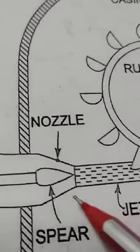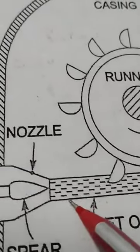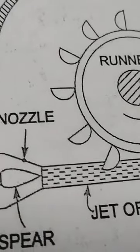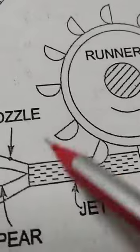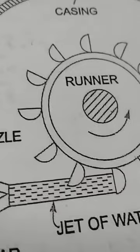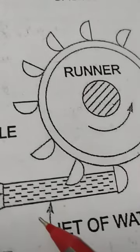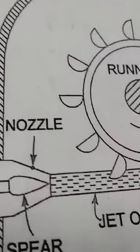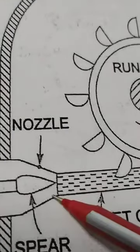Coming to overall efficiency, I take from first to last: the first power is water power and the last is shaft power. The ratio of shaft power to water power is called overall efficiency. To summarize: runner power to water power is hydraulic efficiency; shaft power to runner power is mechanical efficiency; shaft power to water power is overall efficiency.